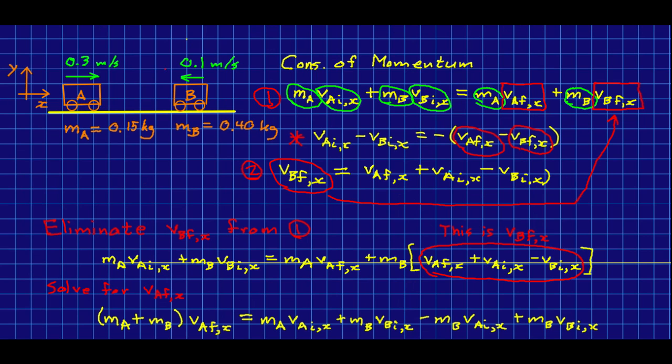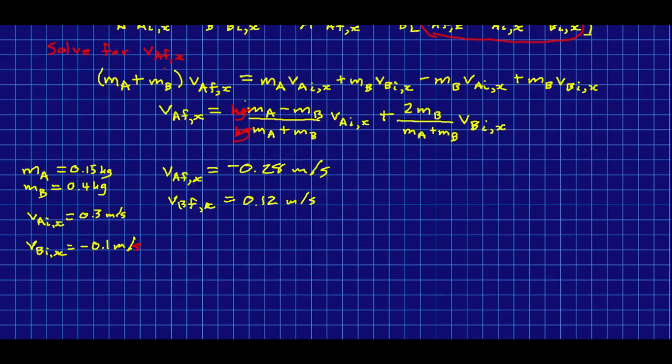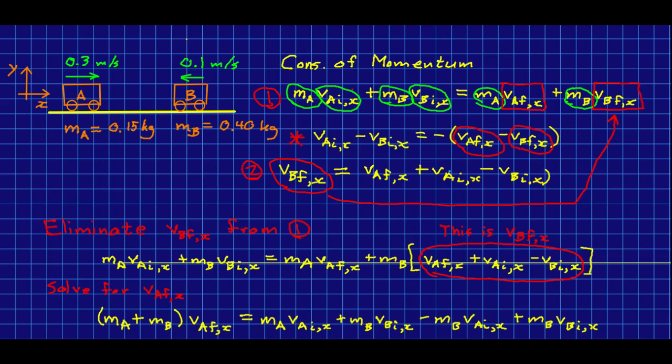Look, we know that the relative speeds have to have remained the same. The relative speed, look at that, was 0.4 meters per second initially, and indeed, if you look here, the relative speed is 0.4 meters per second after, and so that indicates that we have probably not made an error. If we wanted to be really sure, we could also substitute into and make sure that the conservation of momentum works out.